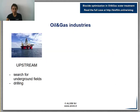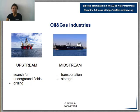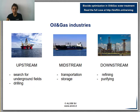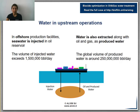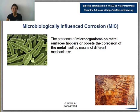Upstream includes the search for underwater fields and the drilling. Midstream involves transportation and storage, while downstream refers to refining and purifying the crude oil or natural gas. In all these phases, huge amounts of water are needed, especially in upstream operations. Seawater is injected in oil reservoirs to maintain the pressure and drive oil towards the well. The injection is extensive and during extraction the amount of produced water is huge — millions of barrels per day. As with all industrial applications dealing with massive amounts of water, there is concern about MIC, responsible for billions of dollars in damages every year.